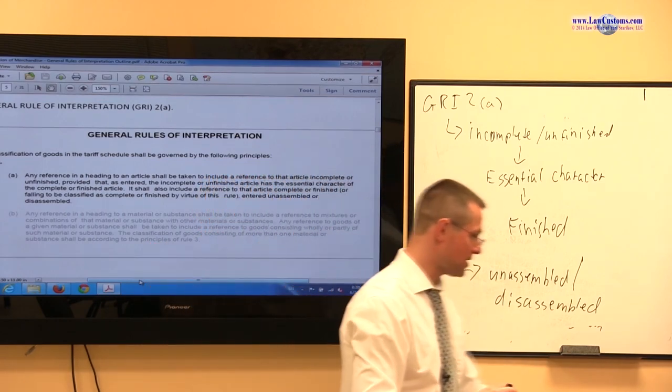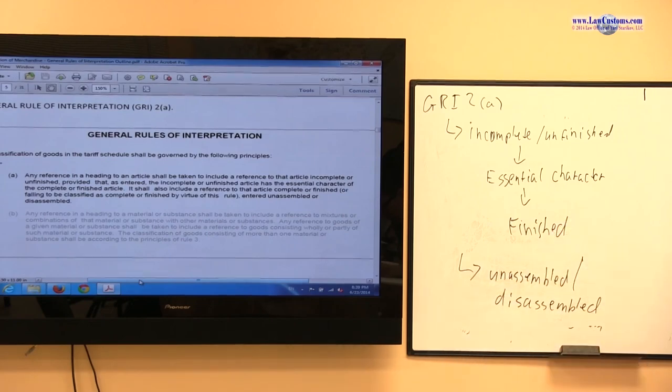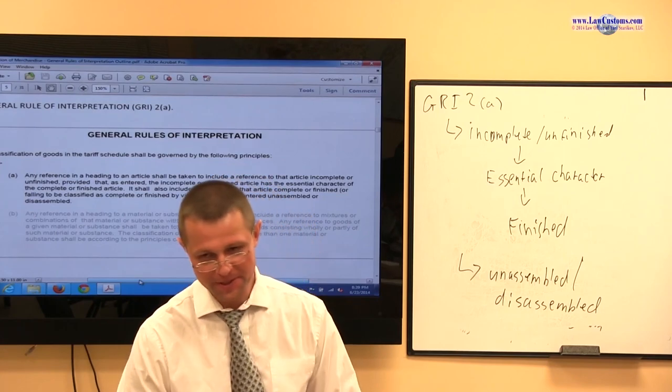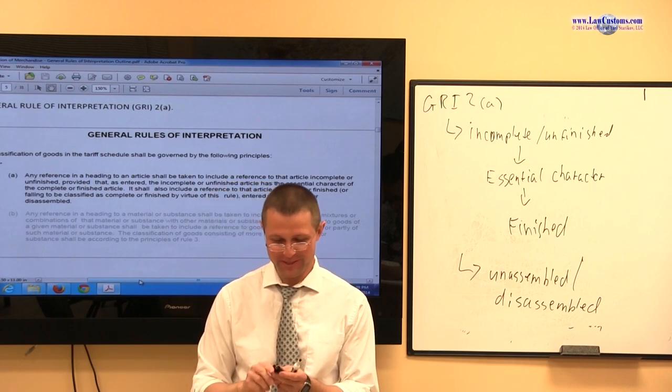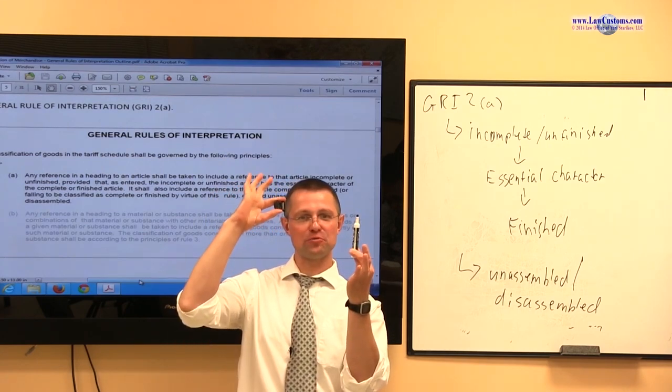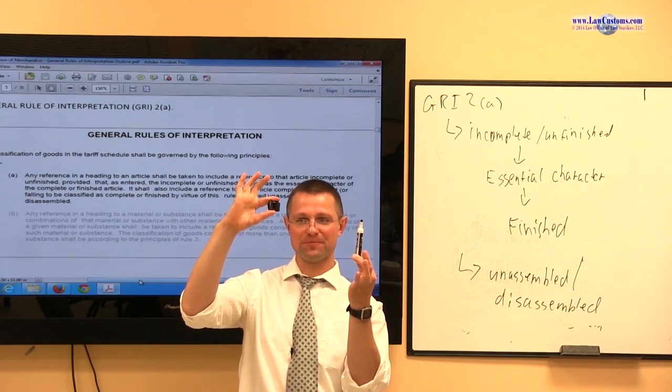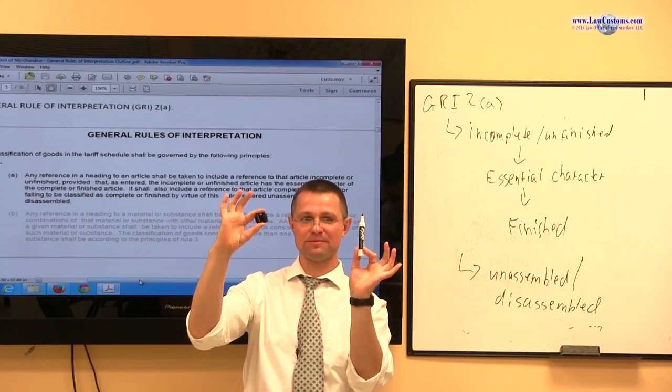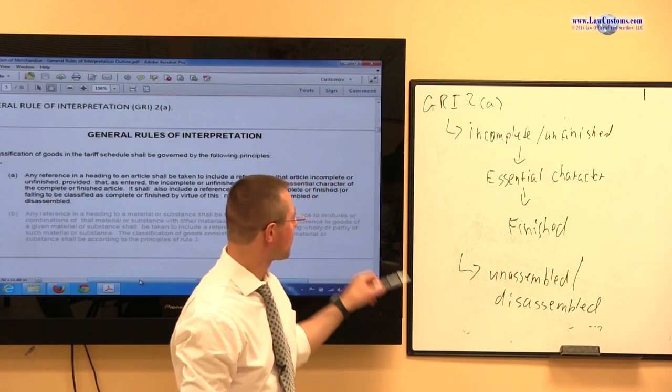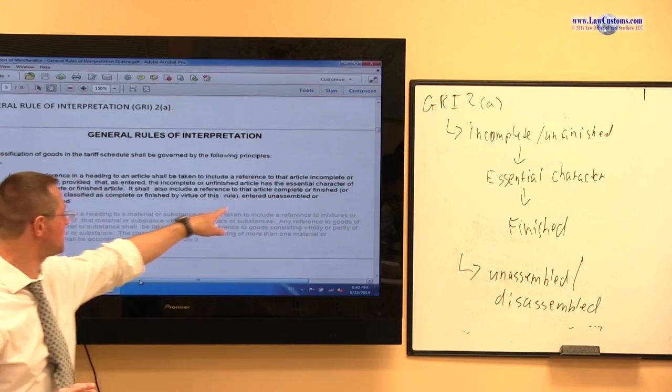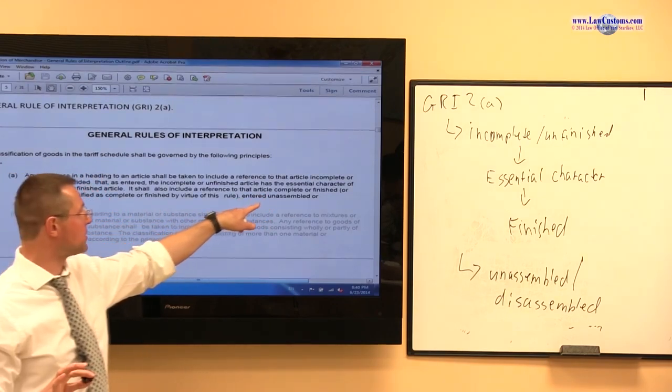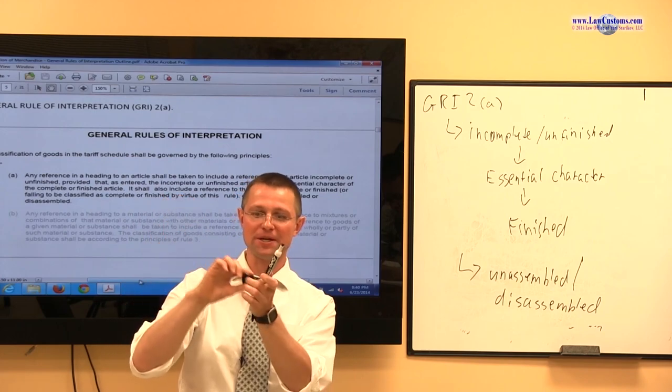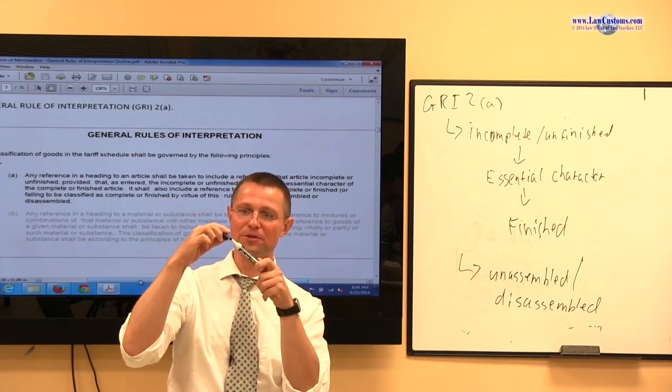Let's have another situation. Let's make it more interesting. The shipment comes in, we have one marker, we have two tops, two caps. They are packaged separately. How do we classify them now? So, again, we go to the text, right? Now, we have unassembled product, right? Unassembled, disassembled product. But really, we only need one cap, right? To make it assembled.